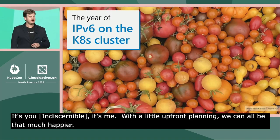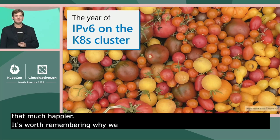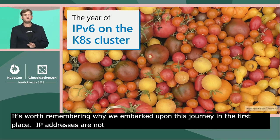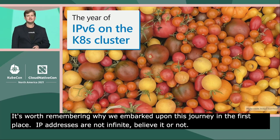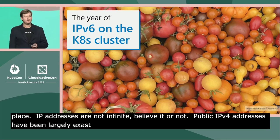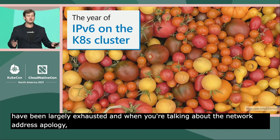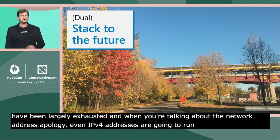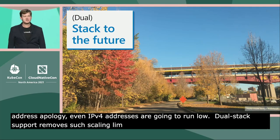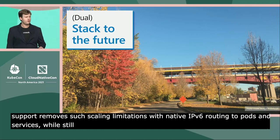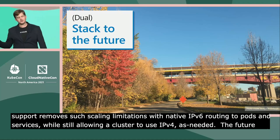It's worth remembering why we embarked upon this journey in the first place. IP addresses are not infinite, believe it or not. Public IPv4 addresses have been largely exhausted. And when you're talking about the flat network address topology of a Kubernetes cluster, even IPv4 addresses are going to run low. Dual stack support removes such scaling limitations with native IPv6 routing to pods and services, while still allowing a cluster to use IPv4 as needed. The future is IPv6 — dual stack is the bridge to get us there.